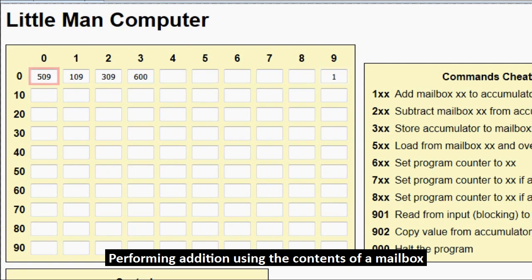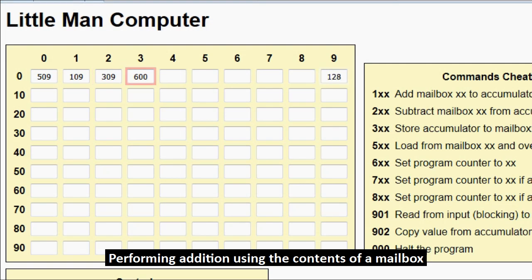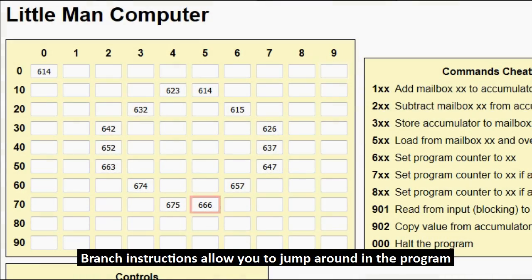Some of the operations include simple math, input and output — reading from the input and output slots — load and store operations that allow you to read information from a mailbox or write to it, as well as branch instructions which change the value of the program counter.